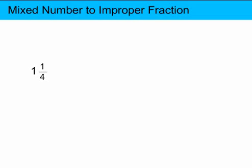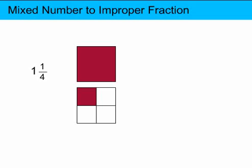And a third example, 1 and 1 quarter. That would be represented by 1 whole part plus 1 quarter of a whole part. We take the whole part and divide it the same way, using the same fractional parts as represented by the denominator, the 4. Divide the whole part into 4 and add up the fractional parts. And as an improper fraction, this would be represented by 5 fourths.